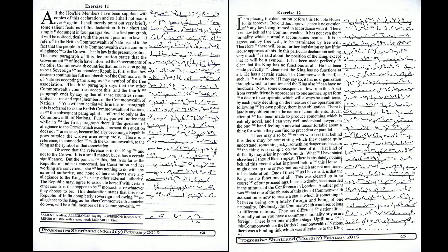It refers to the British Commonwealth of Nations and to the fact that the people in this Commonwealth owe a common allegiance to the crown. That in law is the present position. The next paragraph of this declaration states that the government of India have informed the governments of other Commonwealth countries that India is soon going to be a sovereign independent republic.